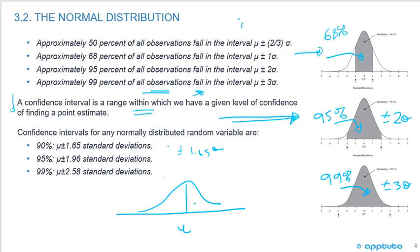One is the percentage of observations that fall under the curve. And the second is we're going to move towards confidence intervals. And that's the confidence that we have for any normally distributed random variable. Confidence intervals are a range within which we have a given level of confidence of finding a point estimate.